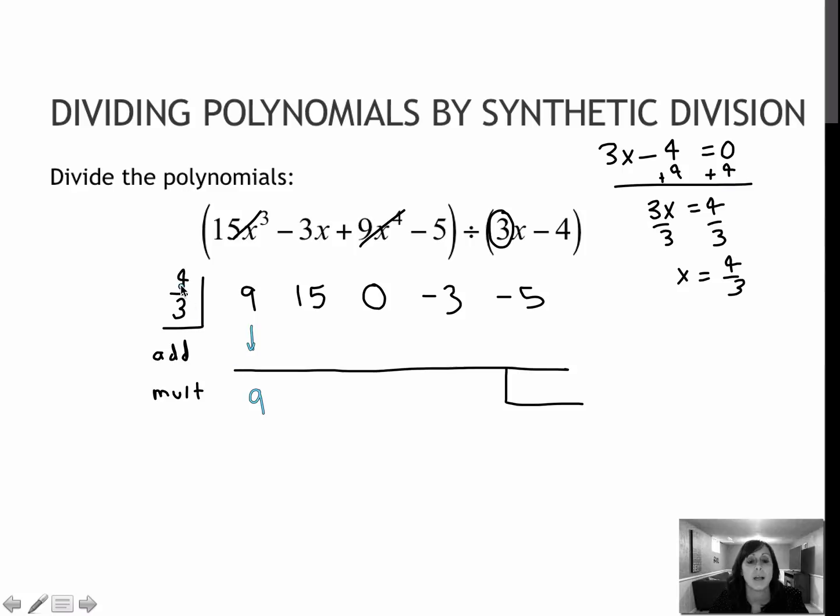I'm going to then multiply 9 times 4 divided by 3, which gives me 12. And then I'm going to add those together to get 27. I'm going to multiply, take 27 times 4, and then divide it by 3, which is 36. I'm going to add those together to get 36.